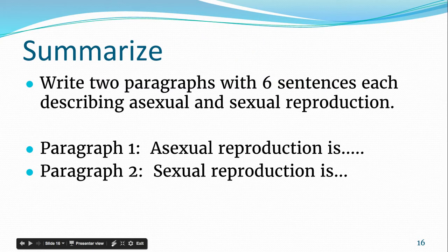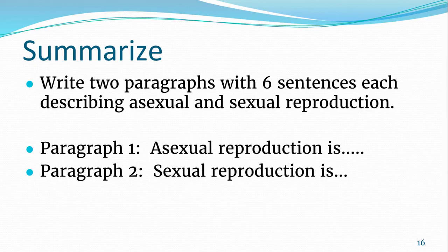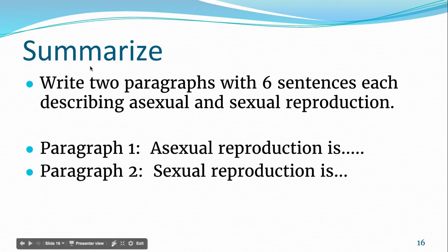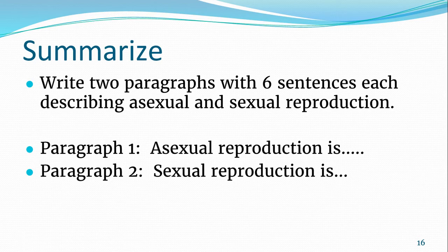What I'd like you to do to make sure you're okay with these notes before you do your other exercise for the day: I want you to write in your notes two paragraphs, six sentences apiece, that describe asexual and sexual reproduction, keeping in mind the objectives we talked about earlier — you want to be able to compare and contrast them and explain the benefits and drawbacks of both.